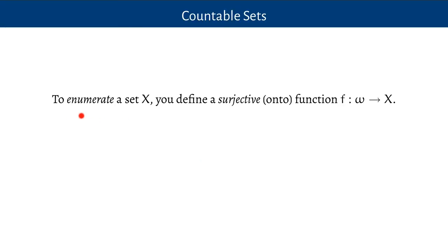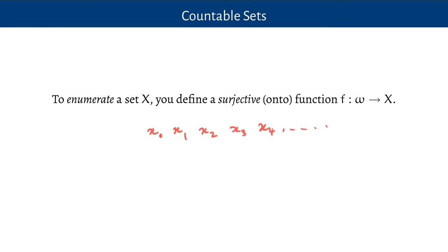We introduced the notion of an enumeration. To enumerate a set you just define a function from the natural numbers onto that set. The function has got to be surjective or onto, which means that anything in the set X has got to be the target of some input — some number as an input. One way to represent such an enumeration is as a list where you might have the members of the set just listed out. The key idea in this function being surjective or onto is that this list contains absolutely all of the members of the set X. Nothing is left out.